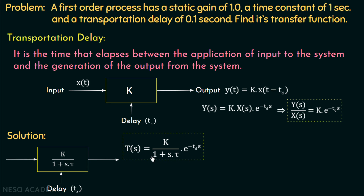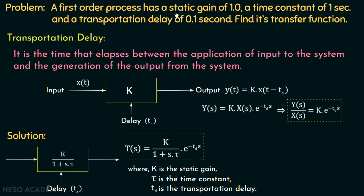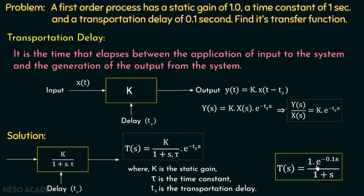This is the transfer function of a first order system with transportation delay td seconds, where k is the DC gain, τ is the time constant, and td is the transportation delay. In our problem, the static gain is 1, the time constant is 1 second, and the transportation delay is 0.1 seconds. Substituting these values, the transfer function T(s) = e^(−0.1s) / (1 + s), confirming static gain = 1, transportation delay = 0.1 s, and time constant = 1 s.